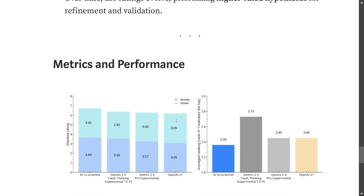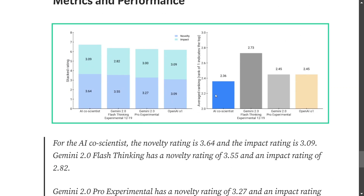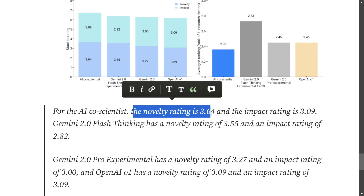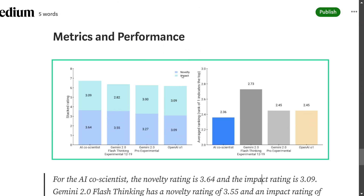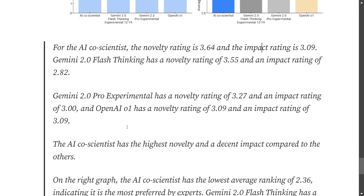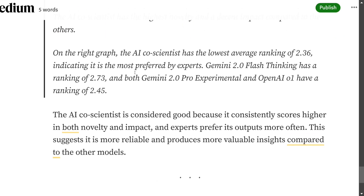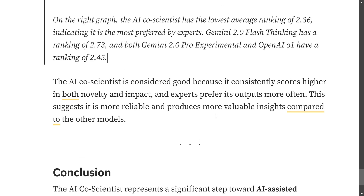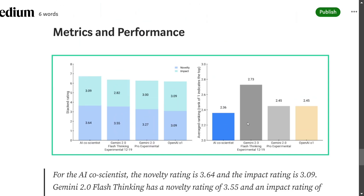Looking at the metrics the team shared — stacked ranking and average ranking, where a rank of one indicates the top — in stacked ranking the AI Co-Scientist's novelty rating is 3.64 and impact rating is 3.09, which is the highest novelty rating compared to Gemini 2.0 Flash Thinking, Gemini 2.0 Pro, and OpenAI's model. The average ranking is quite low compared to other models, indicating it is preferred by experts — a lower average rank means its resolutions are more highly picked.